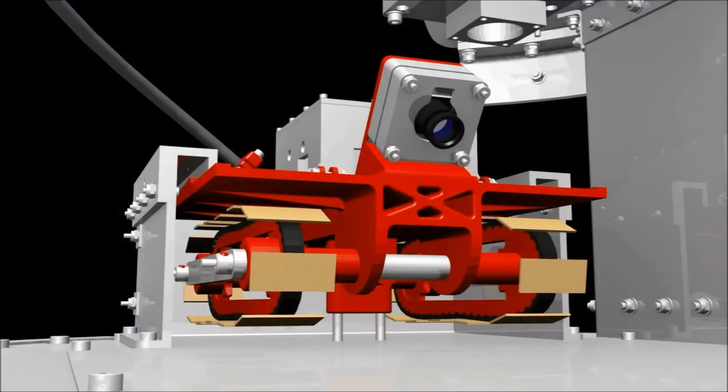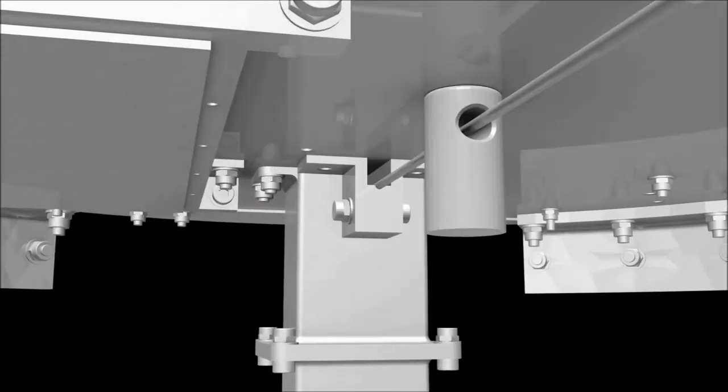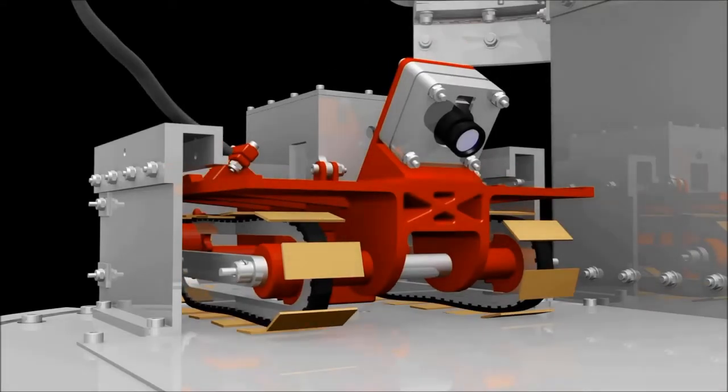First, the rover remains locked into place. This is necessary to protect it from the loads of the rocket launch. It is released by an explosive charge. This cuts a steel cable and the rover is pushed by a spring onto the surface of the test track.